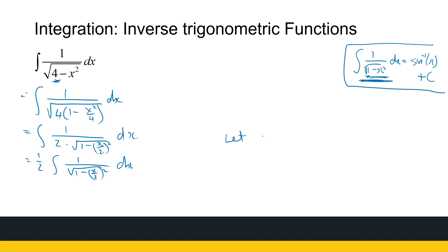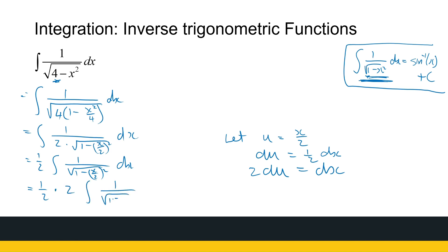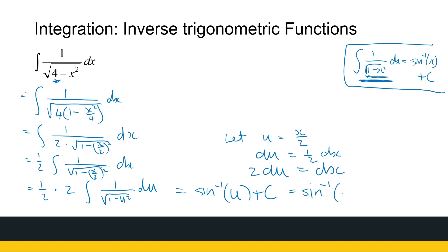Now the substitution part: let u equal x over two, so du equals one half dx, meaning dx equals two du. Substituting gives one half times two times the integral of one over the square root of one minus u squared du. One half times two is one, so this is arc sine of u plus C, which gives us arc sine of x over two plus C.